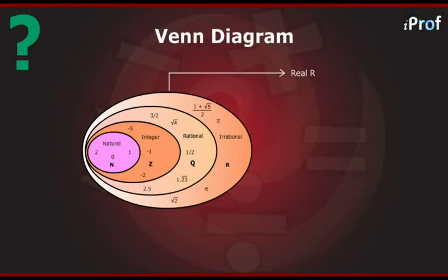Thus, the natural numbers are a subset of integers, which in turn is a subset of rational numbers, which in turn is a subset of real numbers. Thus, real numbers include all natural numbers, integers, rational numbers, and irrational numbers.